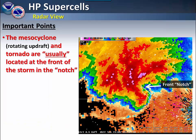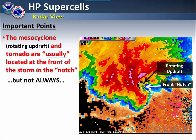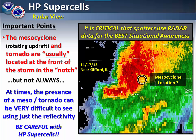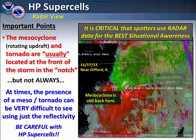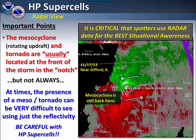When watching on radar, one of the things to look for is what we call a notch in the front of the storm. Usually the tornadoes are located in this area, however this is not always the case. In this example from a tornado that occurred near Gifford, Illinois in November of 2013, the notch would appear to be right over Gifford at the time of the radar image. However, if you look at the actual velocity part of the radar image, you will notice that the mesocyclone is still several miles to the southwest. Since with HP supercells it is very difficult, if not impossible, to see the rotation through the rain, you need to be extra careful.